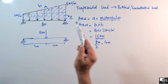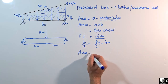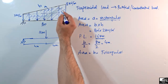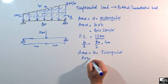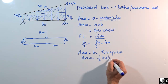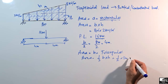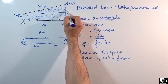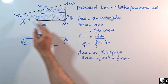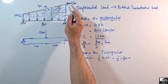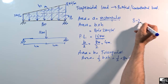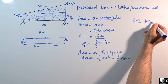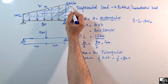Now for Part B: we find the area of the triangular part. The area of a triangle equals one-half times base times height. The base is 8 meters. The height is not 8 kN/m because 2 kN/m belongs to the rectangular part, so the triangle height is 8 minus 2 = 6 kN/m.